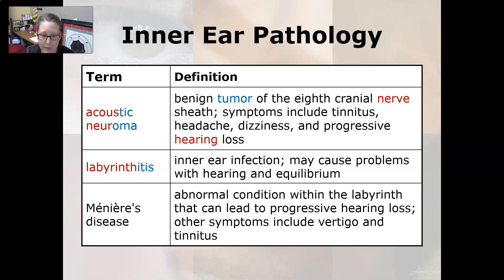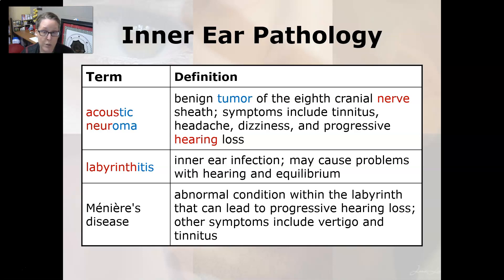And then lastly, we have Meniere's disease, which is an abnormal condition within the labyrinth that can lead to progressive hearing loss. Other symptoms include vertigo and tinnitus, which is ringing in the ears. That wraps up our signs and symptoms and pathology for the ear.